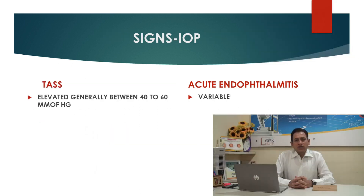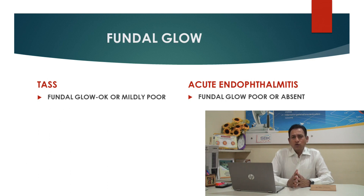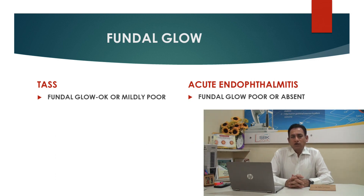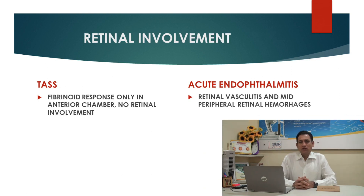Intraocular pressure in TASS is usually on the higher side — sometimes it can go as high as 40 to 60 mmHg. Intraocular pressure in endophthalmitis is usually normal. The fundal glow in TASS will be normal or mildly poor, while the fundal glow in endophthalmitis will be poor or absent.